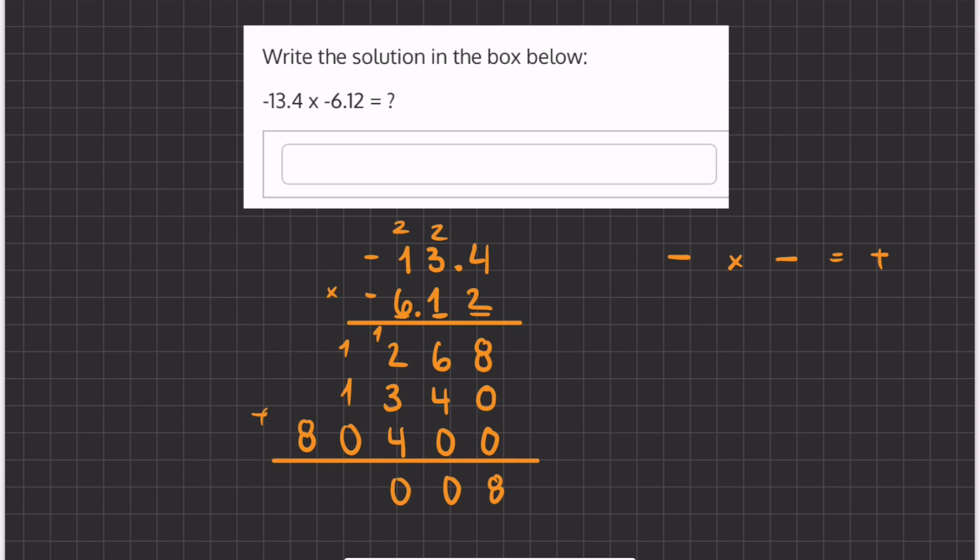And 1 plus 1 is 2, plus 8. 8 plus 0, plus 0, those are placeholders.